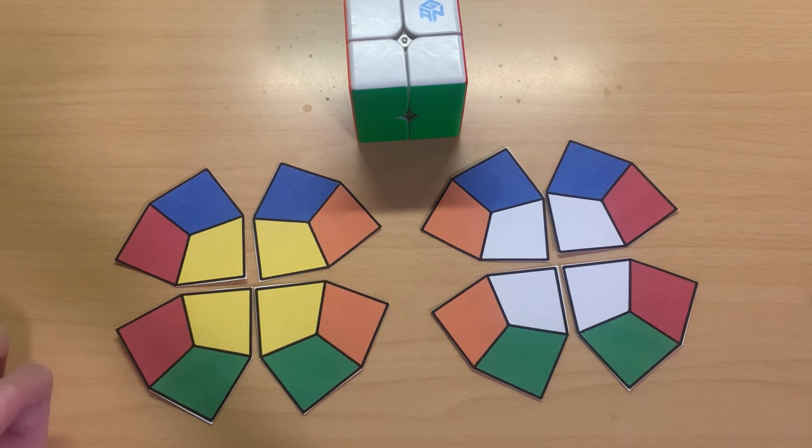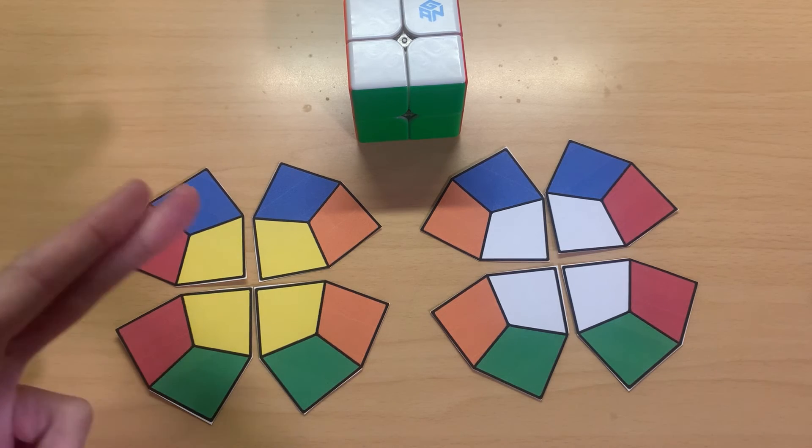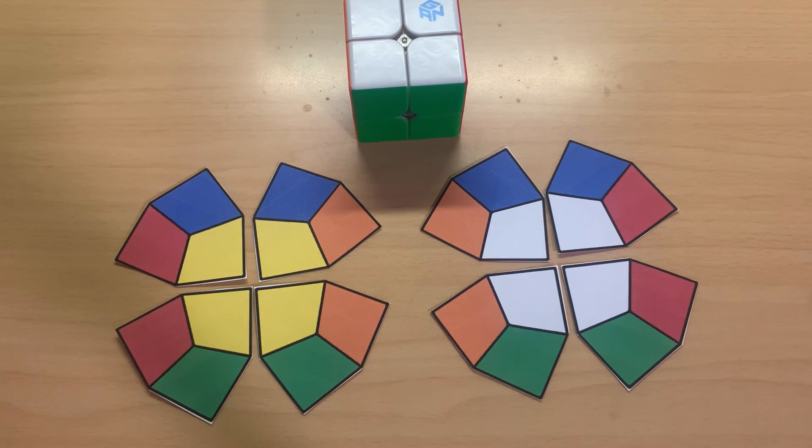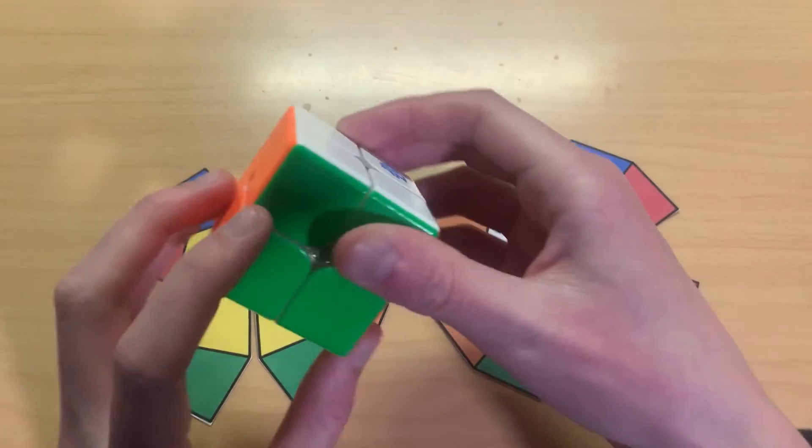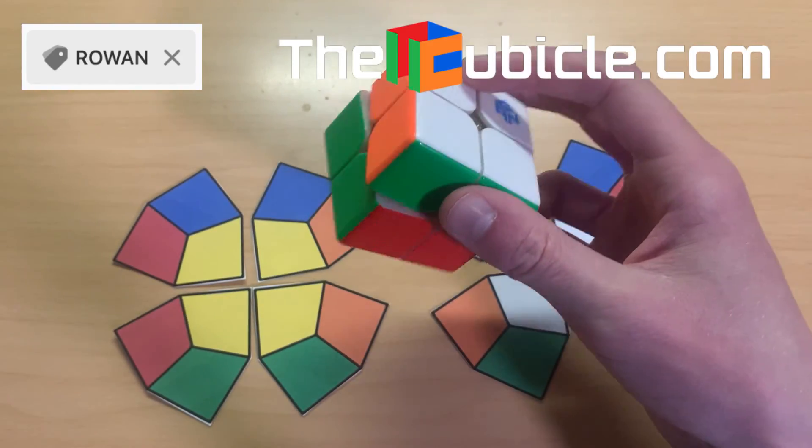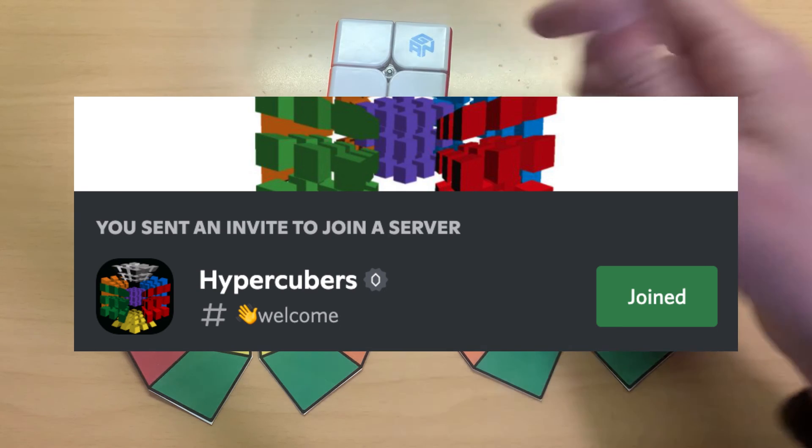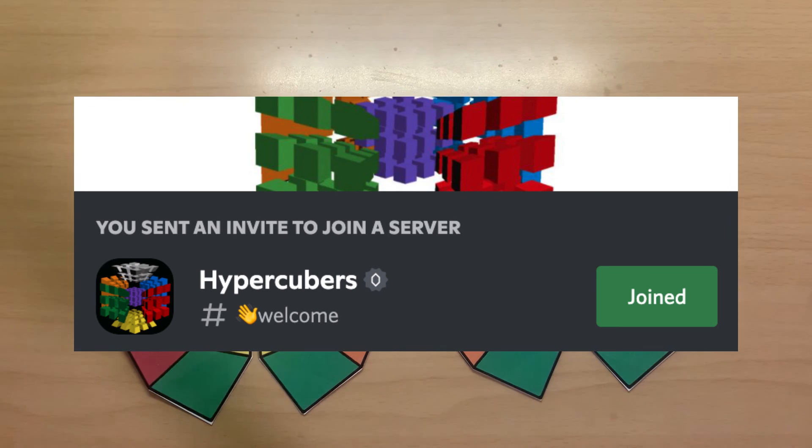I'll leave a link to this template in the description below. If you want to print it out and chop it up and solve it, then go do that, go subscribe to my channel. And don't forget to use my discount code Rowan to save 5% off at thecubicle.com and join our hypercuber server link in the description below. And yeah, thanks for watching.